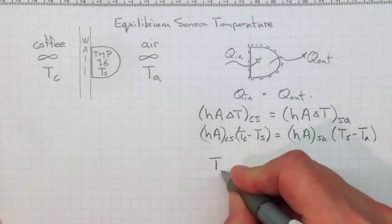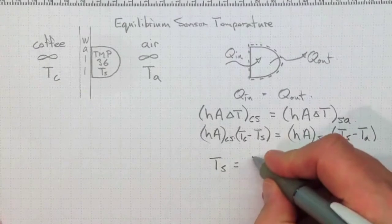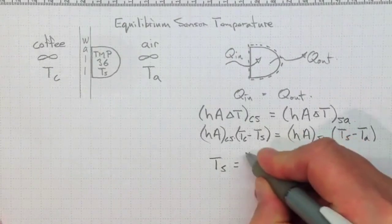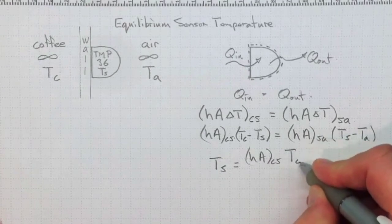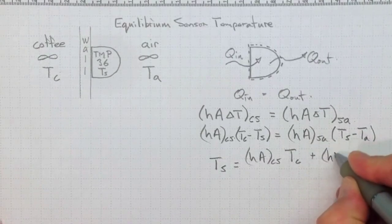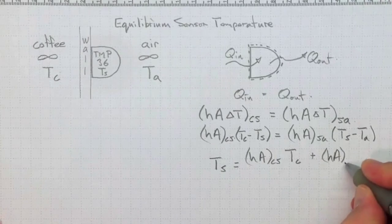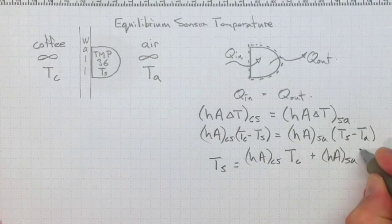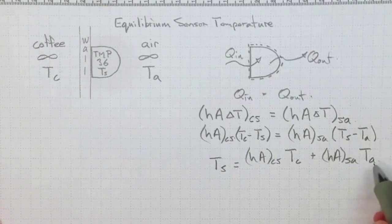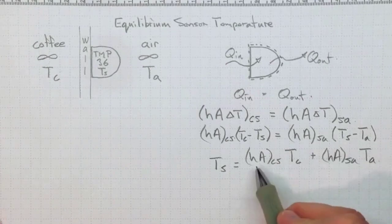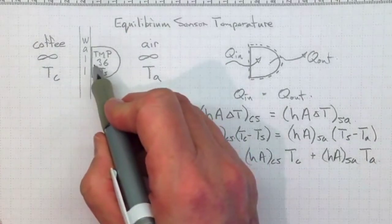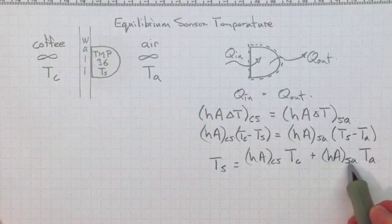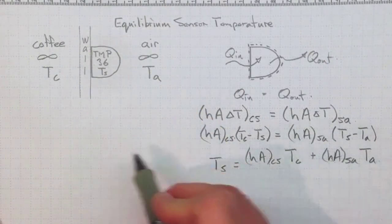And if we do the math, we can come up with an expression for T_sensor equal to hA_CS times T_C, the coffee temperature, plus hA_SA times the air temperature, T_A. So this is weighted with the hA for the coffee to the sensor side. This is weighted with the hA for the sensor to the air side. So if this is bigger, we'll be closer to the coffee temperature than the air temperature.